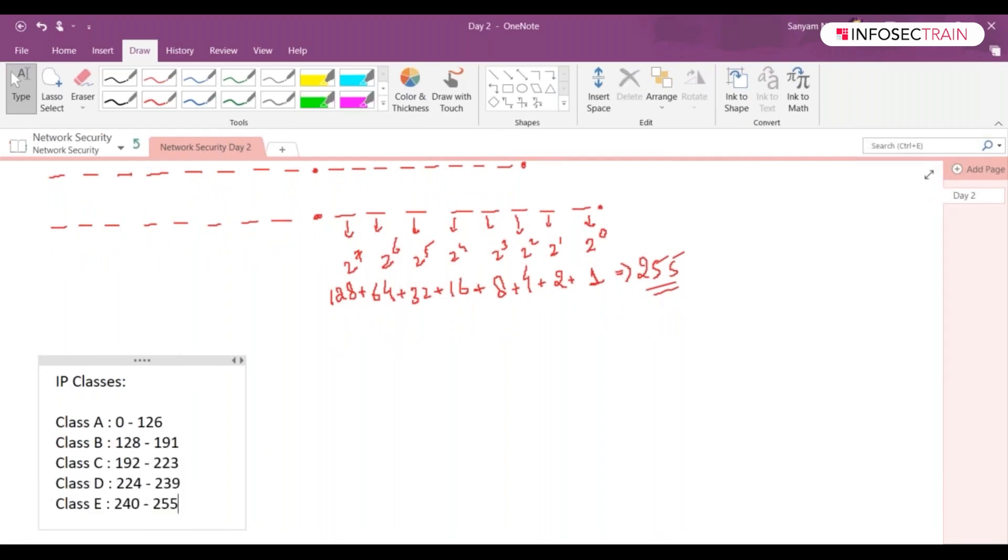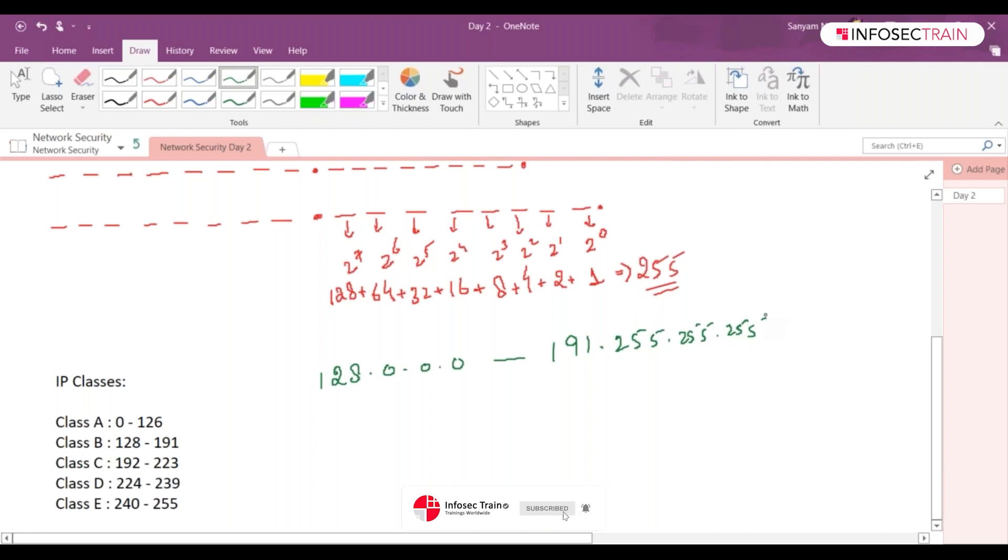Okay, for those who know about this, that's pretty much fine. Just to let you know guys, when I'm writing something like 128 and 191, what I meant over here is, for example for Class B I'm taking an example, it means the range is from 128.0.0.0 to 191.255.255.255. How it is increasing, it is increasing in this way.